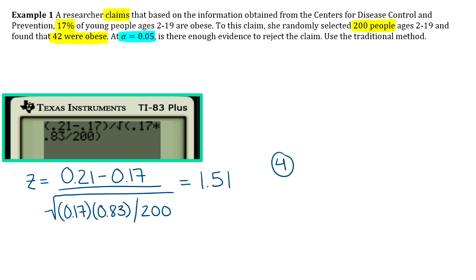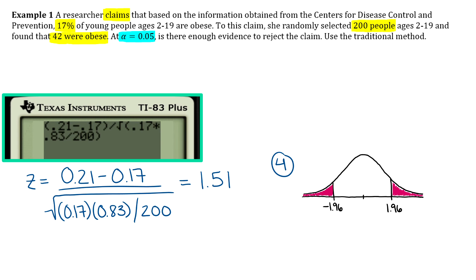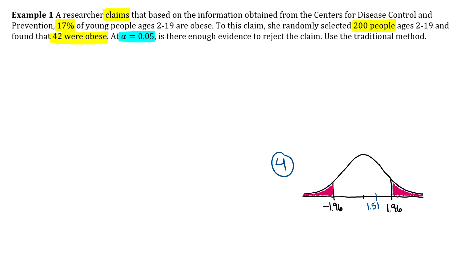Step four: draw your bell curve. Note that the test will likely be short answer and you'll need to show your work, including actually drawing the bell curve — don't skip that. Put the critical values of plus or minus 1.96 on the curve. It's a two-tailed test, so shade both tails as the rejection regions. The test value is 1.51, which clearly falls between them in the non-rejection region, so our decision is: do not reject the null hypothesis.